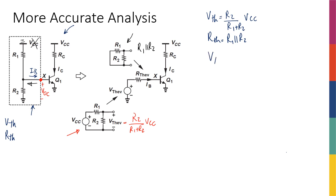And then based on this, I can say that Vx is equal to V-Thevenin minus IB times R-Thevenin. And I call this IB because it's the base current.